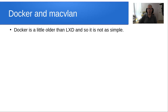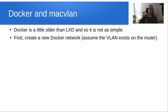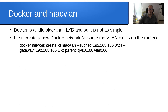How does this work for Docker? Docker and MacVLAN work like this. Docker is a little older than LexD, so it's not quite as simple or straightforward. First, you want to create a Docker network, assuming that the VLAN exists on the router. The command is 'docker network create,' telling it to use the MacVLAN driver with a subnet and a gateway. The parent is going to be whatever parent device dot whatever VLAN number you want, and then you name the network — in this case, VLAN 100. I know this looks a little convoluted but we'll see an actual example shortly.